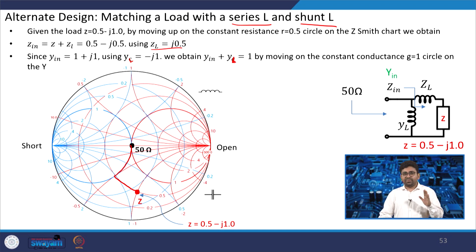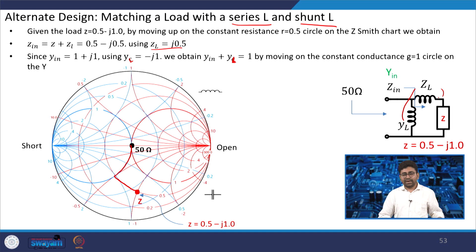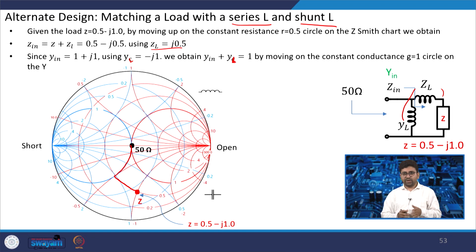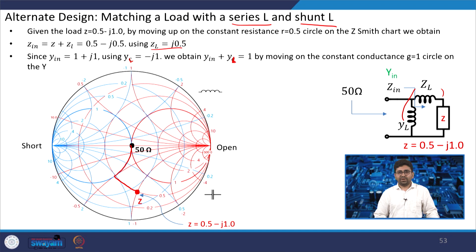In RF circuit design or RF transceiver design on chip, we generally do not use the LL configuration because it requires many inductors. We will see in the next class how an inductor can be represented on-chip — it takes a huge space. So, to reduce chip space, it is better to use capacitors.